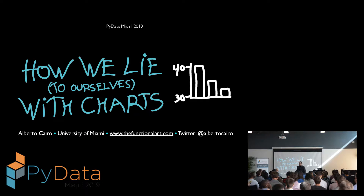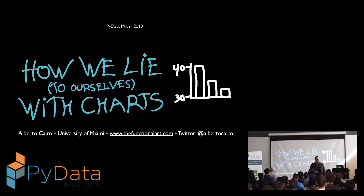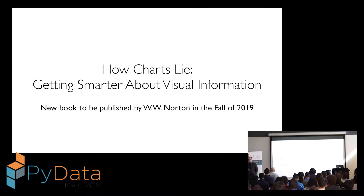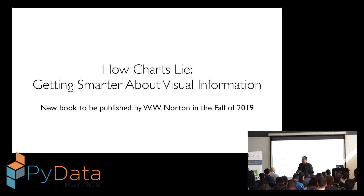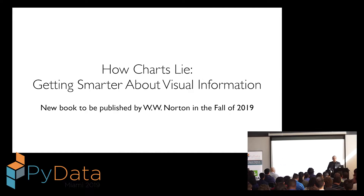It is a talk about charts, and more in particular about how charts mislead, and moreover, how we mislead ourselves when we see charts, and what we can do about it. The talk you're about to see is a trailer for a book I'm publishing in the fall of 2019. It's going to be published by W.W. Norton, which is a general publisher. The title is How Charts Lie: Getting Smarter About Visual Information — a book teaching the general public how to approach charts, graphs, maps, and how to interpret them correctly and avoid common misunderstandings.